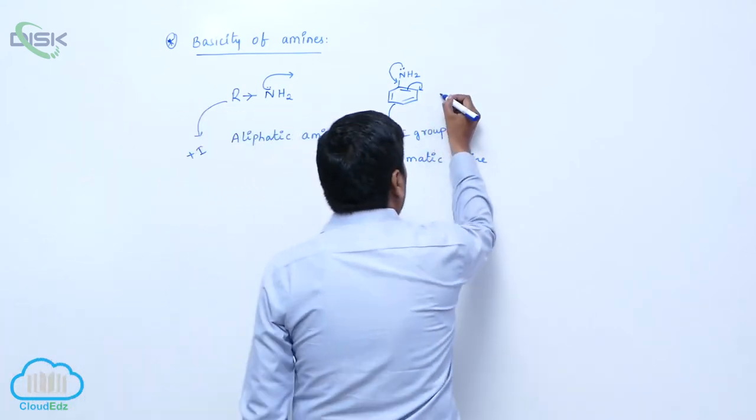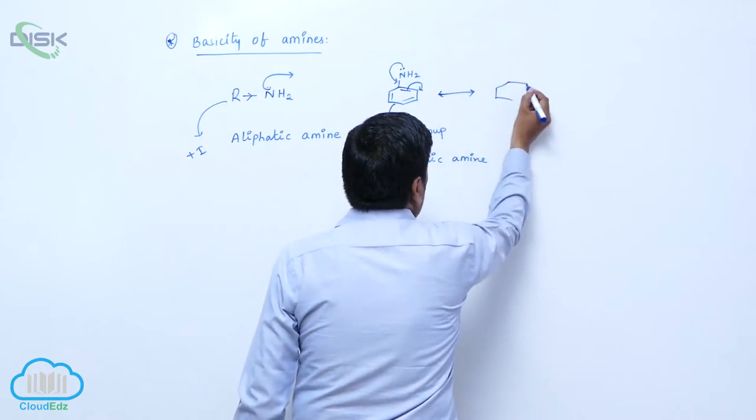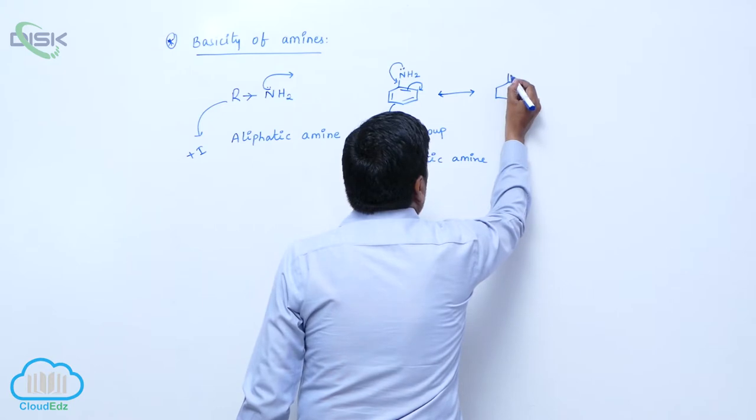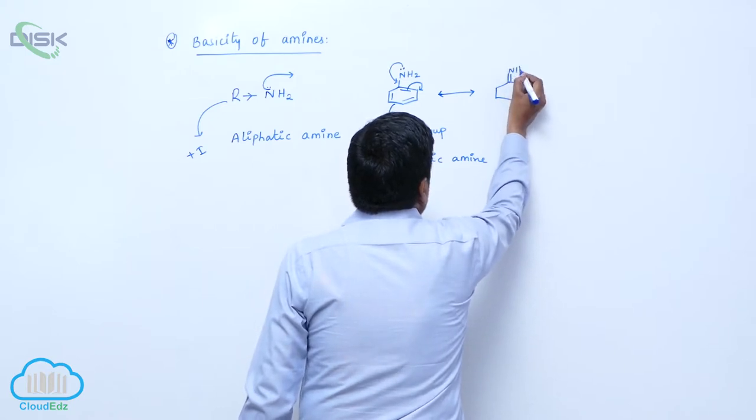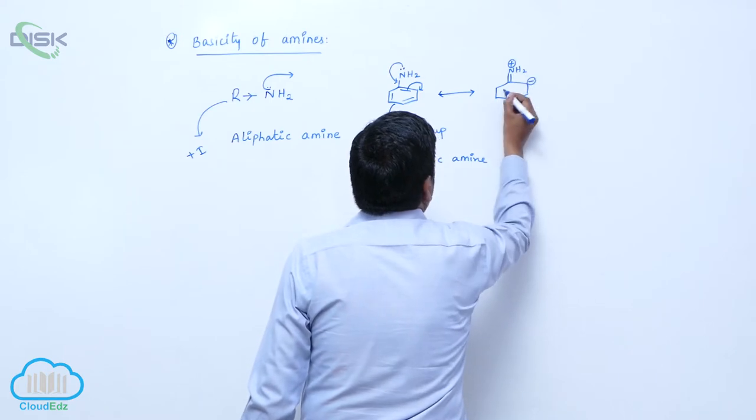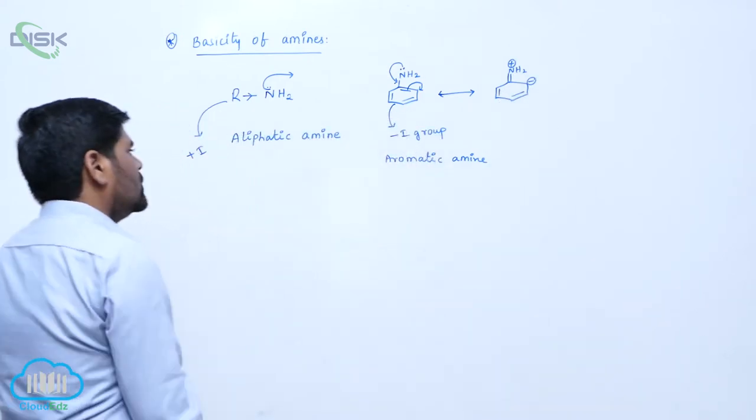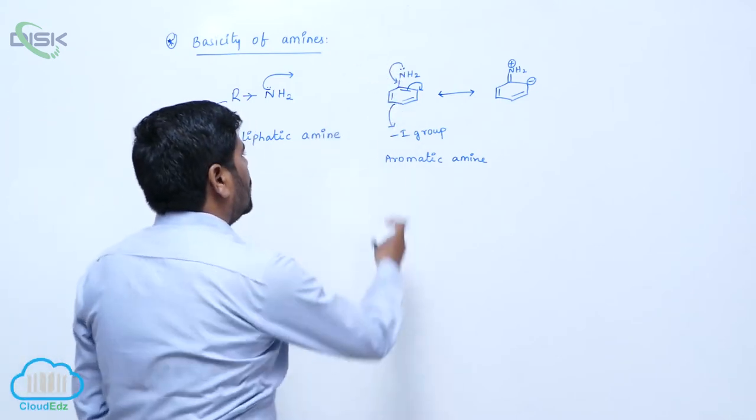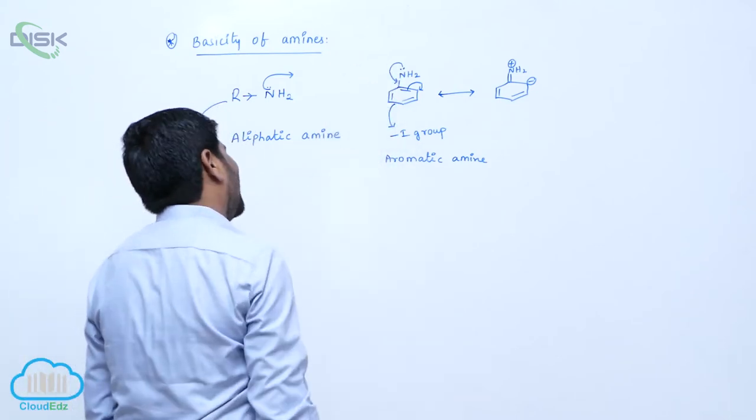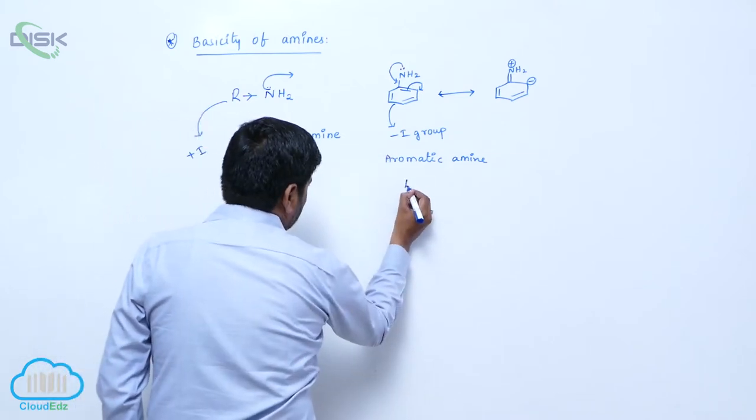So, therefore, due to resonance, double bond, NH2 plus, minus, then like this. So, due to conjugation of the lone pair of electrons, availability capacity decreases. That is the reason why this one is less basic.